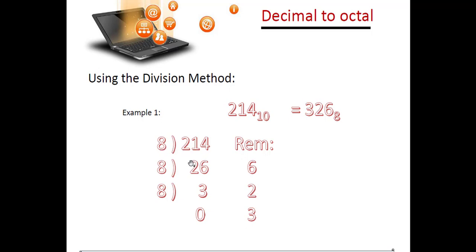When 214 is divided by 8, it yields a quotient of 26 and a remainder of 6. Then 26 divided by 8 gives a quotient of 3 and a remainder of 2. The remainder is 3, and now we have reached 0, so the process is over. Collecting the remainders in reverse order gives us 3, 2, 6. So the octal result is 326 base 8.